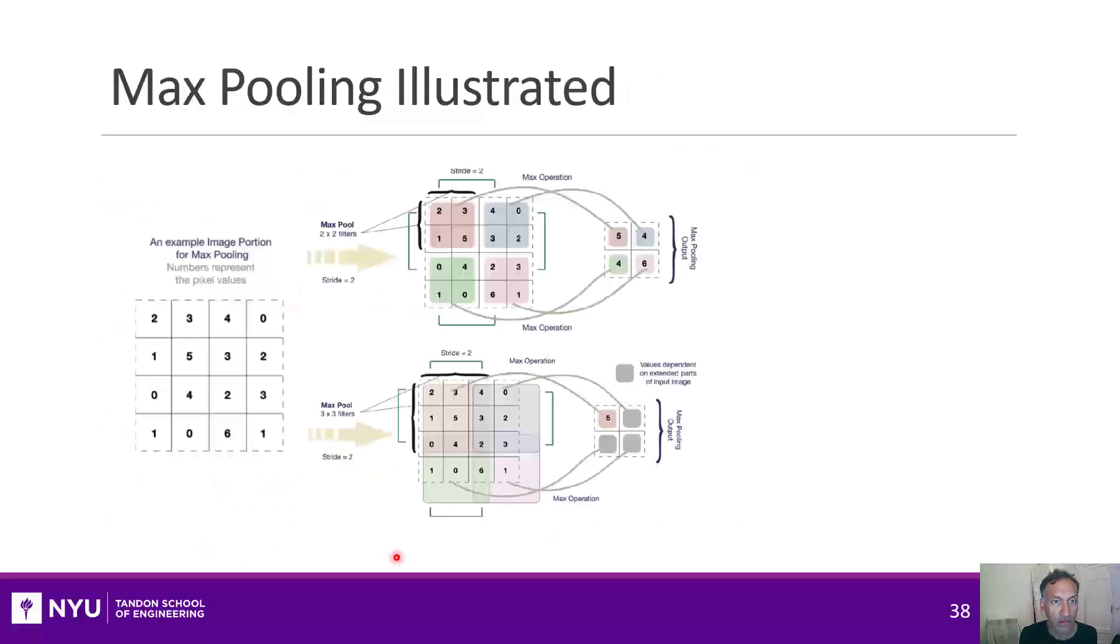All right, let's just illustrate max pooling. So here we have some image or section of an image. And if you do max pooling with, say, 2x2 filters and a stride of 2, you first look in this first, say, 2x2 region here, and you pick the largest number. So that's 5. And then you stride over by 2. So you go to this blue-colored area and you pick 4 and so on.